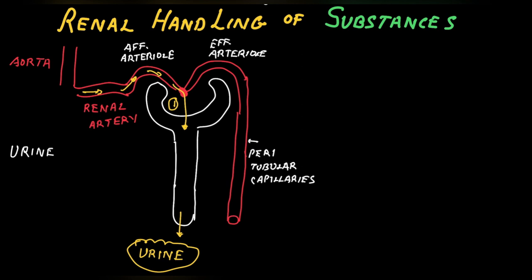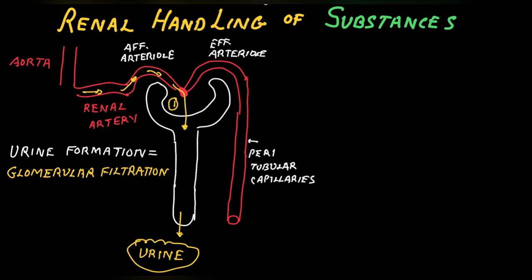Urine formation is the sum of three basic processes. The first is filtration — filtration across the glomerular capillaries into the Bowman's space. This filtration is relatively protein-free and free of cells. The glomerular filtration rate is 125 ml per minute or 180 liters per day. Lining the tubule are the epithelial cells across which various transport processes occur.